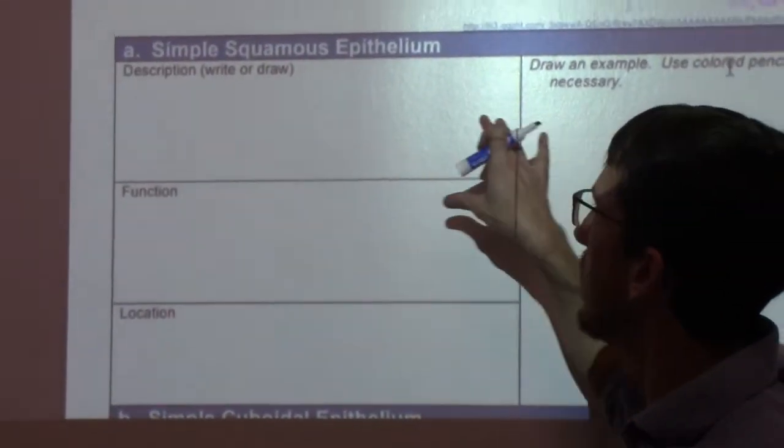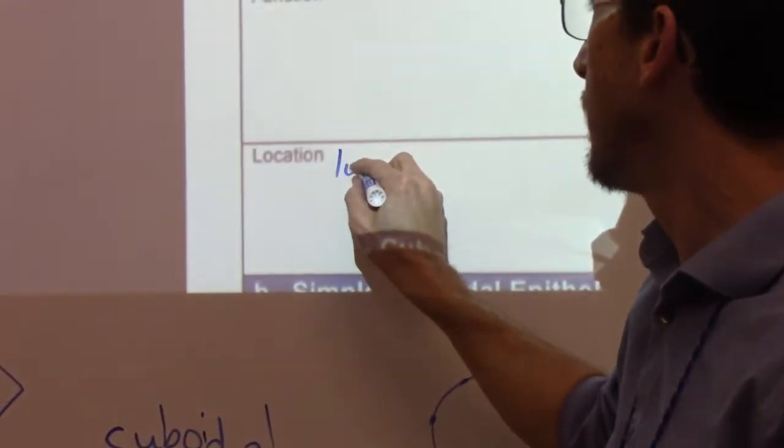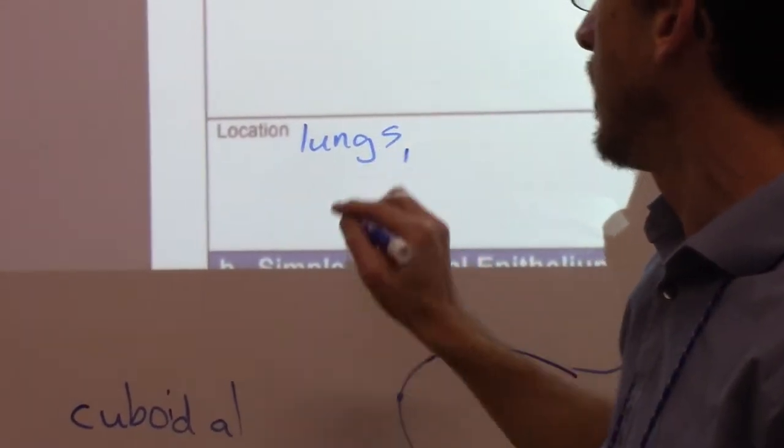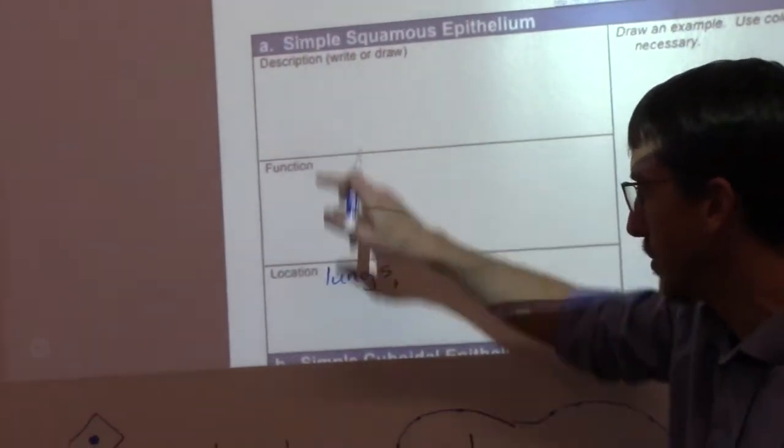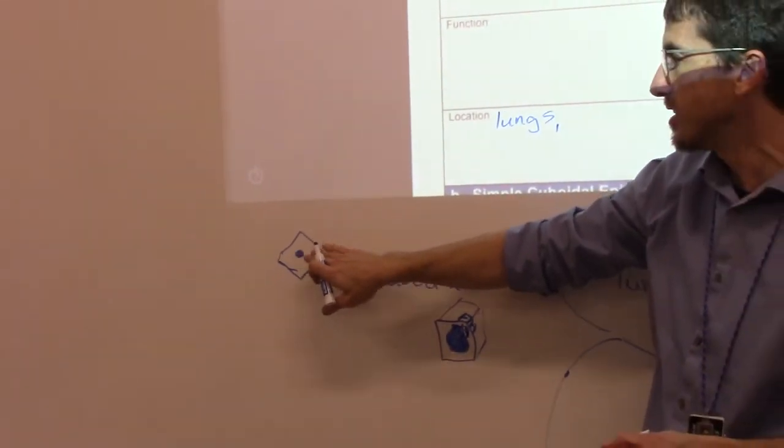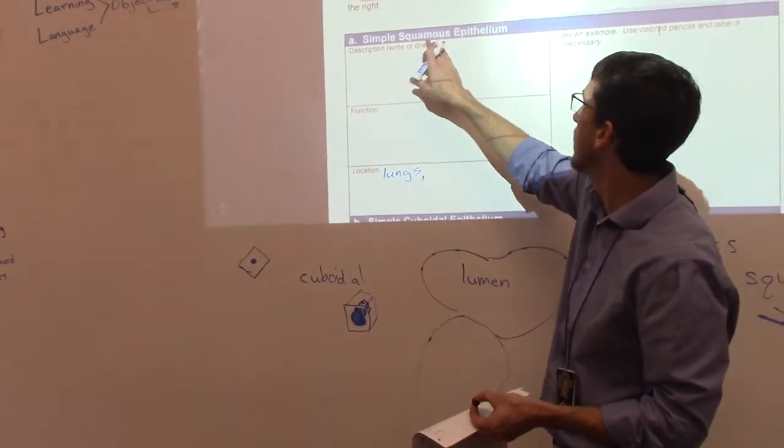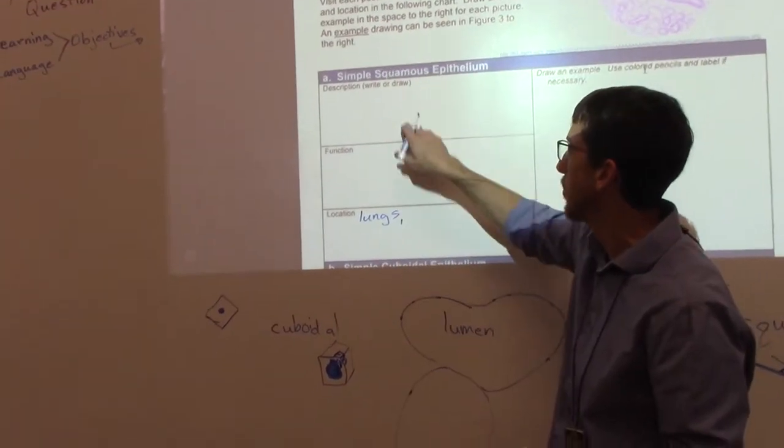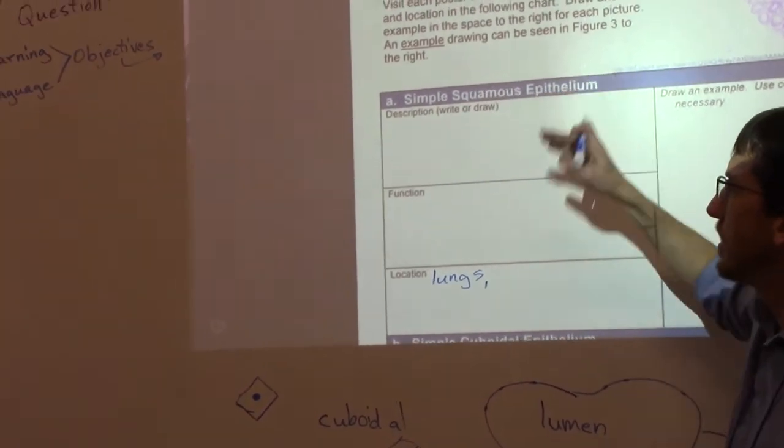So, this first one is in the lungs. I'll start down here. And some other places. Like the skin, we just mentioned, is actually these simple squamous, just a one single layer. Well, actually, it's not simple. It's a lot of layers of this. They're like pancakes. But in the lungs, which is this example we're going to look at, we just have like a simple one layer of it so we can exchange gases.